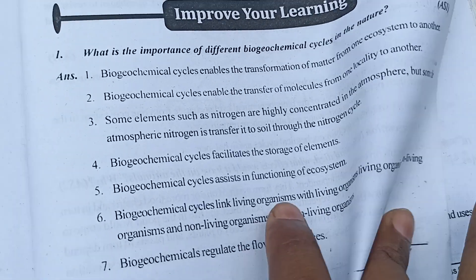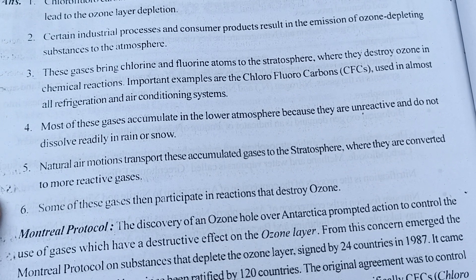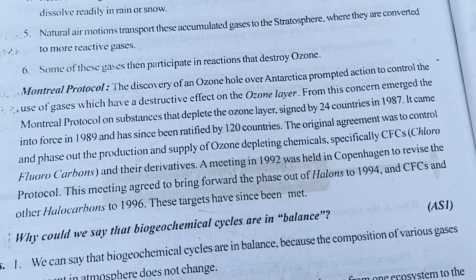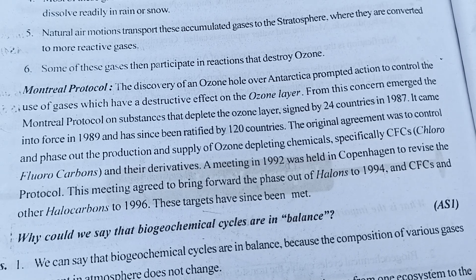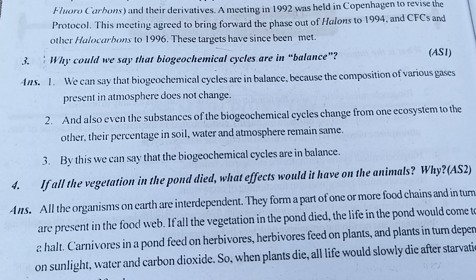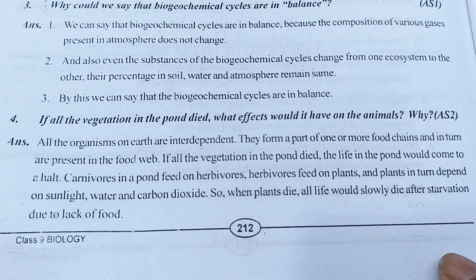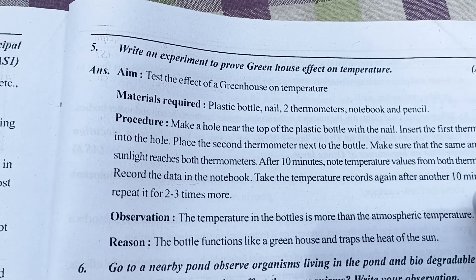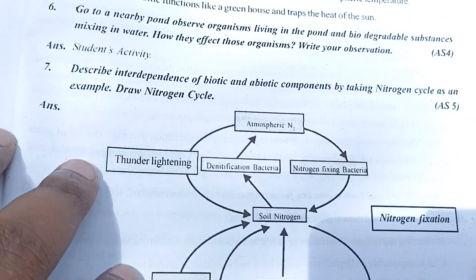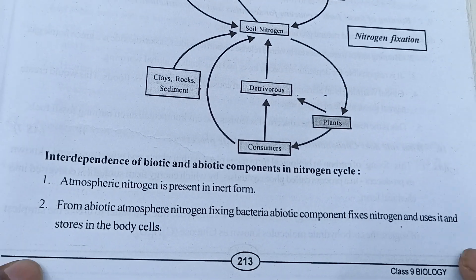Let's go next - this is our second question and this is the answer of that one. After that, this is our third question and answer. Then this is the fourth one answer, and after that this is our fifth question and the answer of the fifth one. Then comes the sixth one answer - this is a student activity so leave it - and this is the seventh one answer.